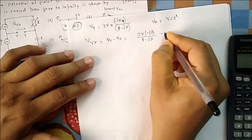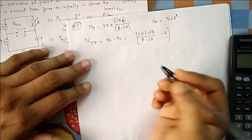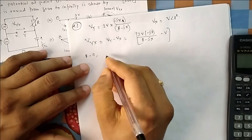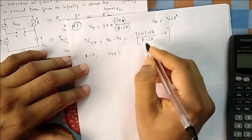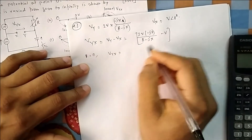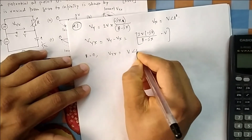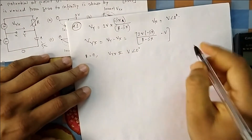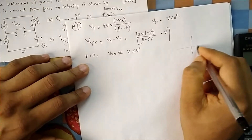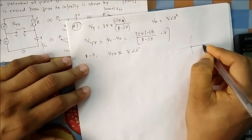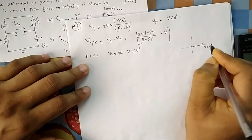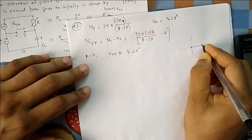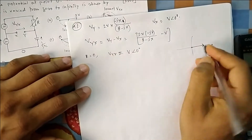Putting R equal to zero: the minus jX terms cancel in numerator and denominator, giving 2V minus V, which equals V. So Vyx equals V∠0° when R equals zero. So at R=0, the phasor of Vyx is at V∠0°, which is the reference direction.